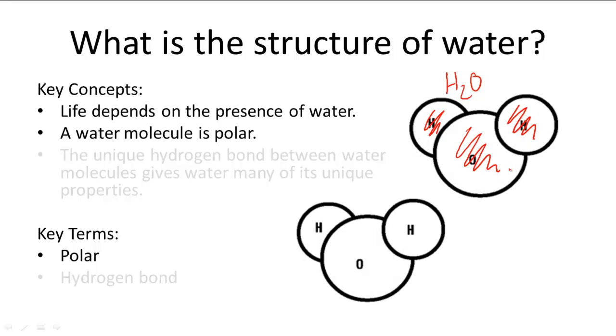So naturally, the oxygen has a stronger pull on electrons. This makes oxygen slightly more negatively charged and the two hydrogens slightly more positively charged.